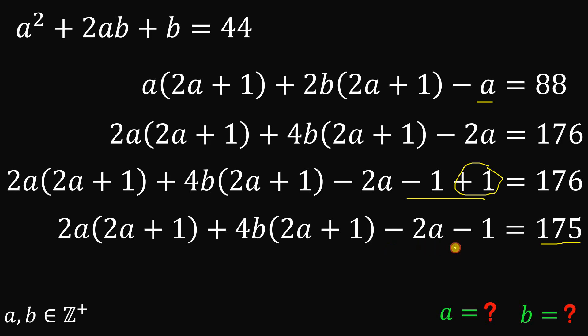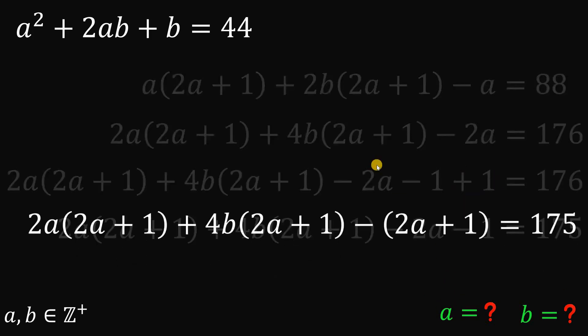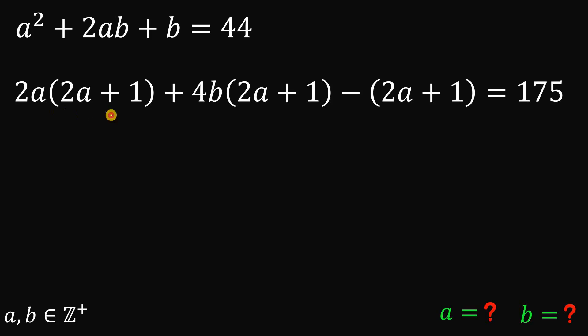And focusing on these two terms, factor out negative 1 and we have negative 2a plus 1. And there you have it. Let's focus on this result. We now have a common factor of 2a plus 1. So why not factor out 2a plus 1. So 2a plus 1 multiplied by 2a, the remaining term, 4b minus 1 equals 175.